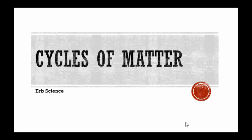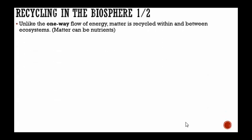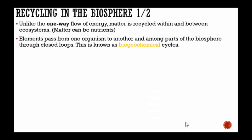Today we're going to be talking about cycles of matter within the biosphere, within the geosphere, going on within Earth. Unlike the one-way flow of energy, matter is recycled within and between ecosystems over and over again. When we talk about matter, we're also including nutrients. Elements like carbon and oxygen pass from one organism to another and among parts of the biosphere through closed loops. This is known as the biogeochemical cycle.